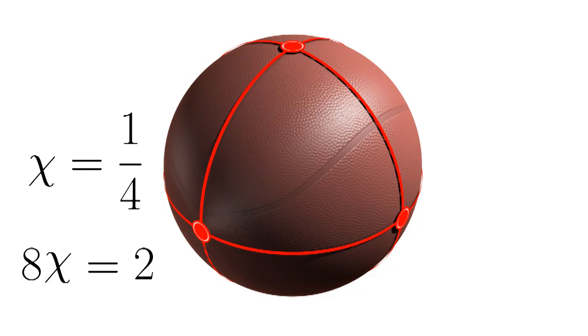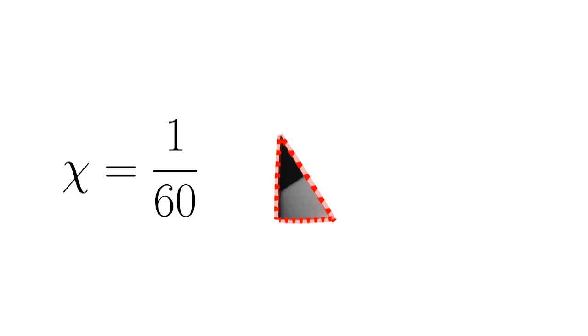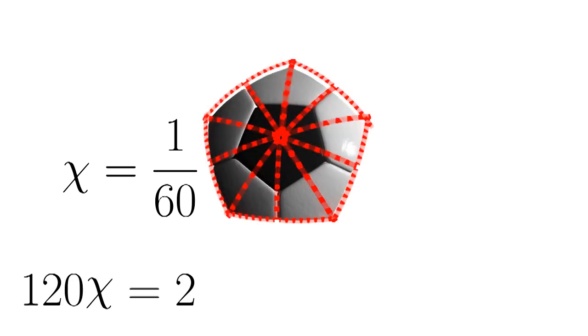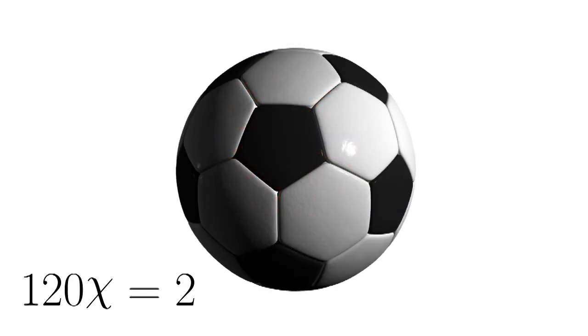The idea is that we create an orbifold and compute its characteristic, then copy the orbifold enough times to make a characteristic of two — to make a sphere. The basketball orbifold was copied eight times. A soccer ball's orbifold has a characteristic of one-sixtieth, so its orbifold is copied 120 times — that's 10 times 12 equals 120.